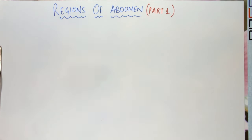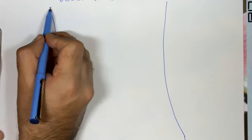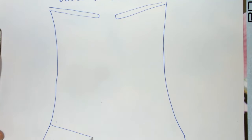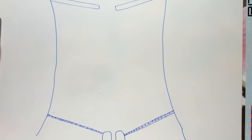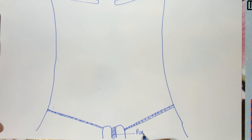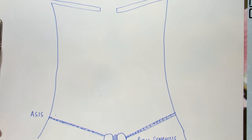These are the two clavicles, and below these are the two inguinal ligaments. On the medial side they are attached to the pubic tubercles on the pubic bone, and these two pubic bones are joined by the pubic symphysis. The lateral attachment of the inguinal ligament is to the anterior superior iliac spine.